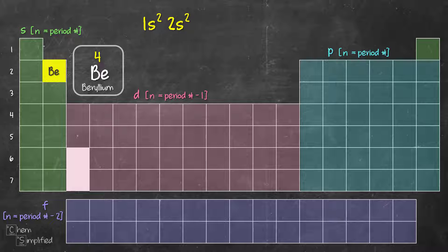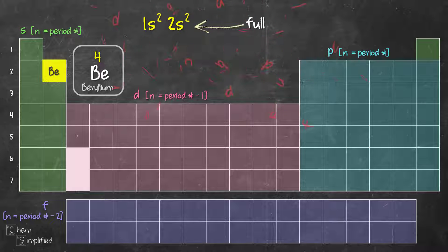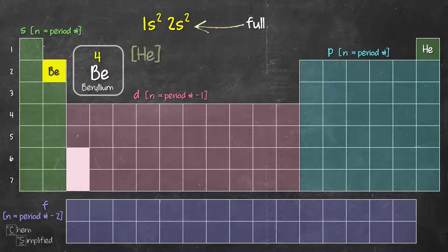To verify the complete electron configuration, add all the superscript numbers — they should equal the number of electrons. For beryllium: 1s2 + 2s2, that's 2 plus 2 equals 4, which matches beryllium's 4 electrons. For the abbreviated or noble gas shorthand configuration, locate the noble gas in the previous period. Beryllium is in period 2, so the noble gas in period 1 is helium. Write helium in square brackets — [He] represents 1s2 — then write what's left: 2s2. That's the abbreviated electron configuration for beryllium.